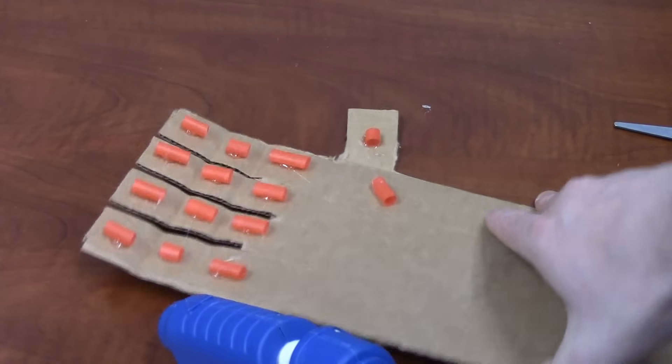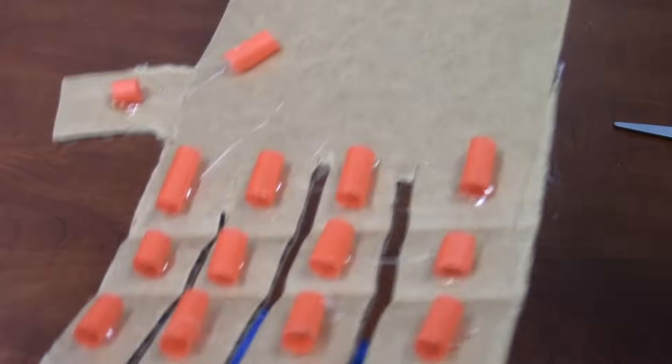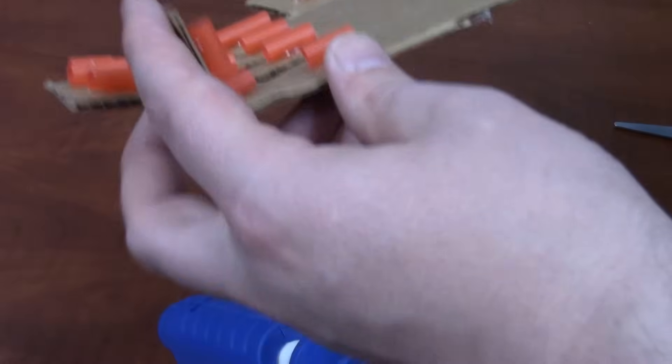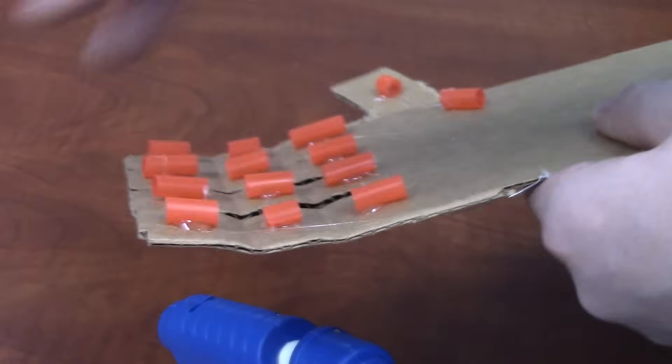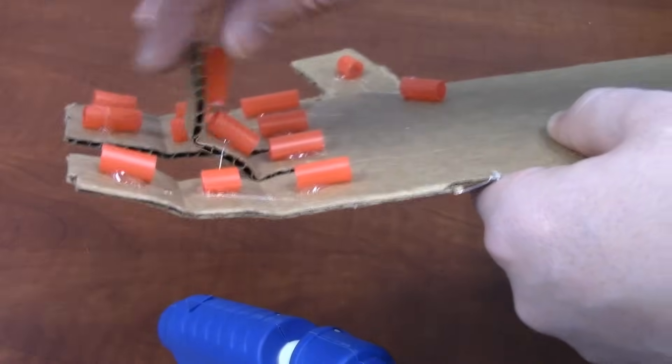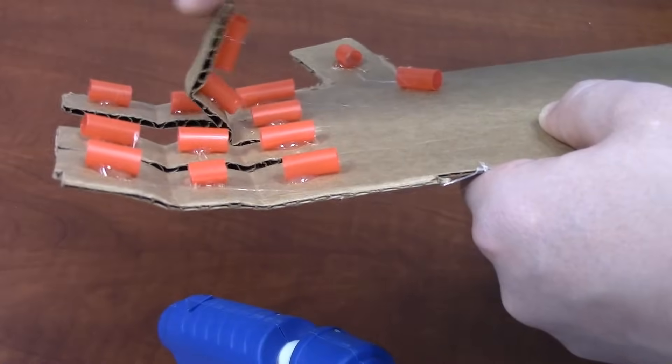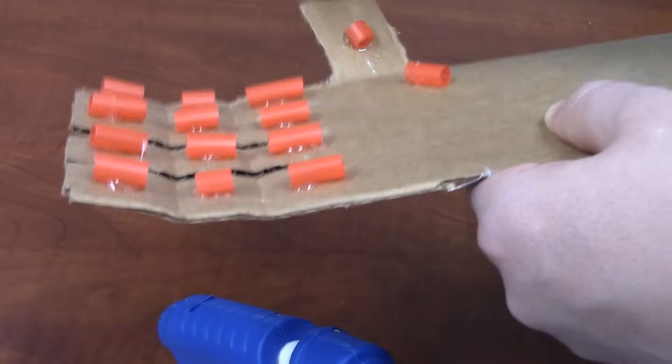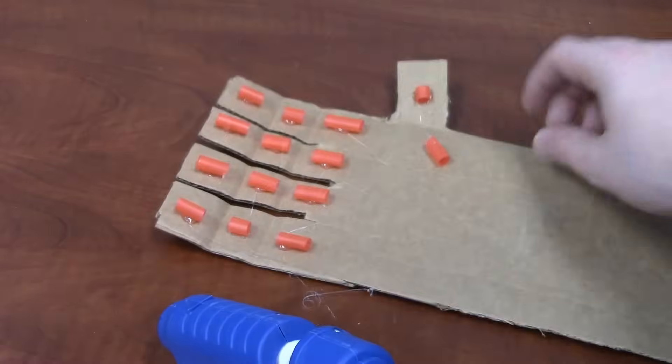So now we have straw bits on each individual finger. So when you bend, it should do that. Kind of check it. And now it's time to string them up.